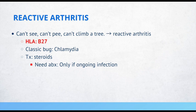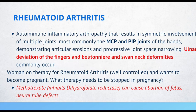Rheumatoid arthritis. This is an autoimmune inflammatory arthropathy that results in symmetric involvement of multiple joints, most commonly the MCP and PIP joints of the hands, demonstrating articular erosions and progressive joint space narrowing. Ulnar deviation of the fingers and boutonnière and swan-neck deformities commonly occur. If a woman being treated for rheumatoid arthritis wants to become pregnant, methotrexate needs to be stopped, as it inhibits dihydrofolate reductase and can cause neural tube defects.